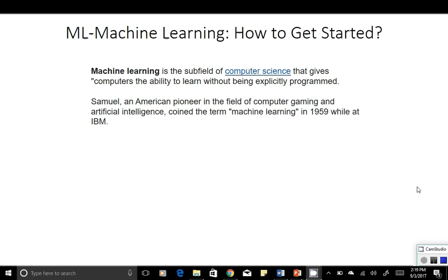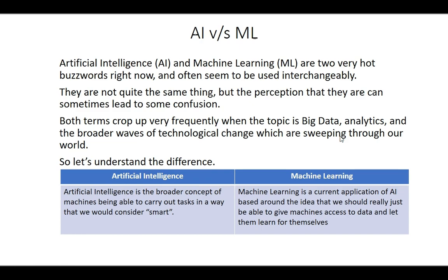Artificial intelligence and machine learning are two very hot topics right now and are often used interchangeably. They are not quite the same thing, but this perception can lead to some confusion, which comes up very frequently when the topic is big data analytics and the broader waves of technological change sweeping through our world.